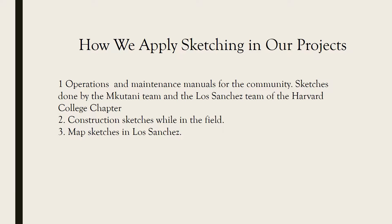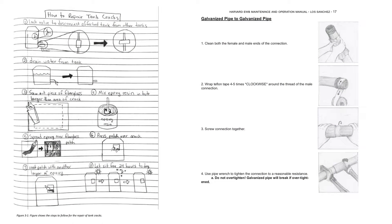We'll also look at the various applications of sketching in our chapter, using examples from the Mkutani team and the Los Angeles team of the Harvard chapter. These are examples of operation and maintenance manuals written for communities. The one on the left was done by the Mkutani team and the one on the right by the Los Angeles team. These are very good drawings because you can understand the motion being referred to just by looking at the pictures — one key thing about sketching is making sure you capture the actions.